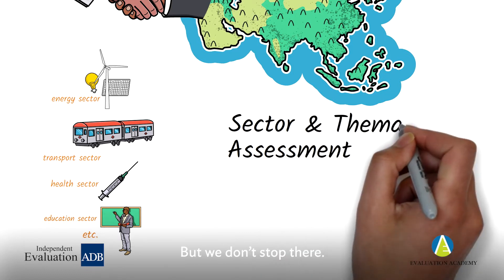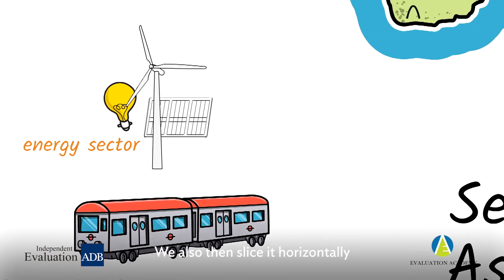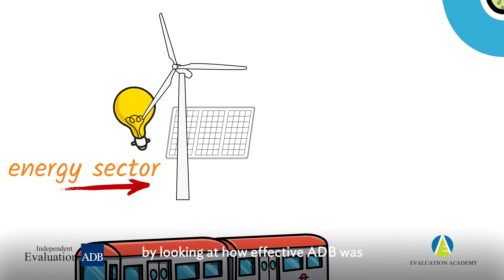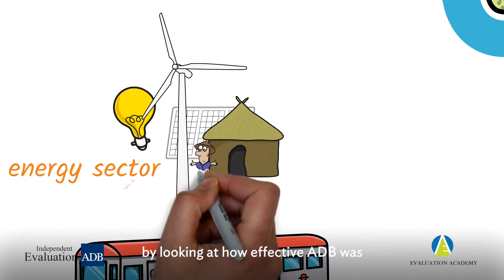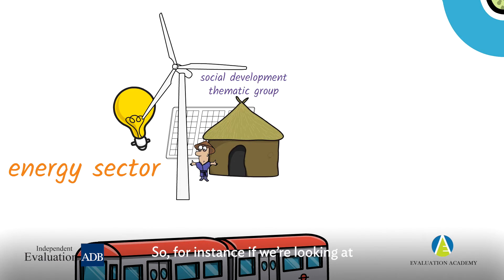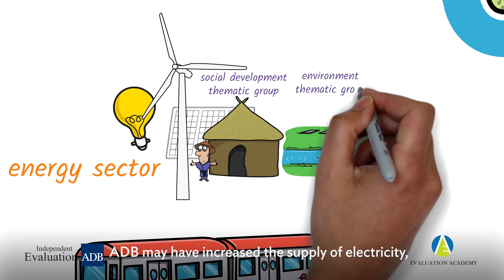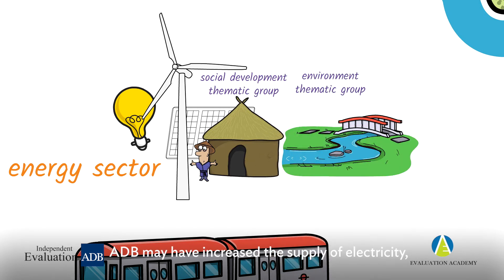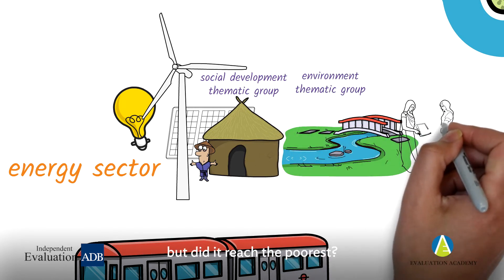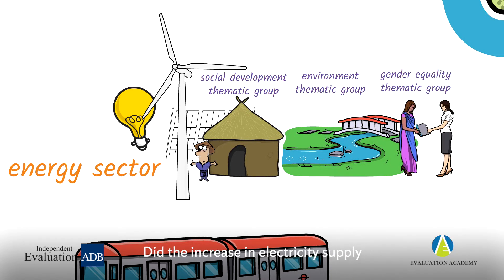But we don't stop there. It's not just a sector assessment — that's kind of like a vertical assessment. We also slice it horizontally by looking at how effective ADB was at achieving thematic level results. For instance, if we're looking at ADB's performance in the energy sector, ADB may have increased the supply of electricity, but did it reach the poorest? Was it done in a climate friendly way? Did the increase in electricity supply benefit women and improve their lives?